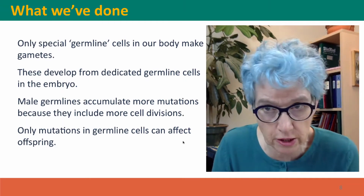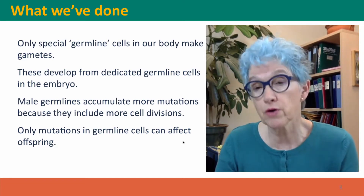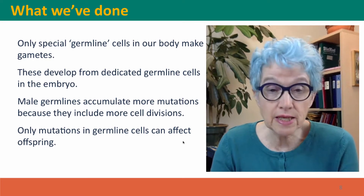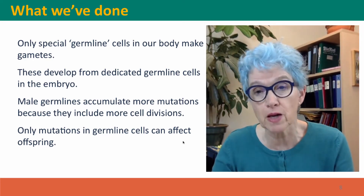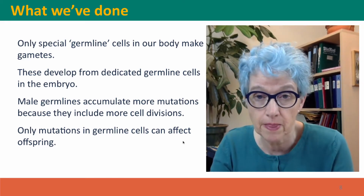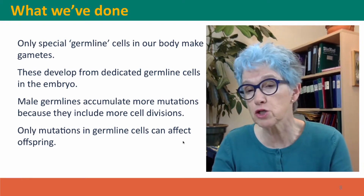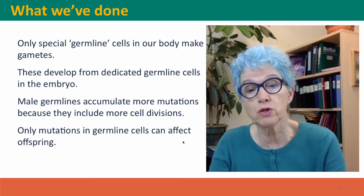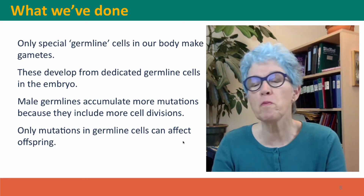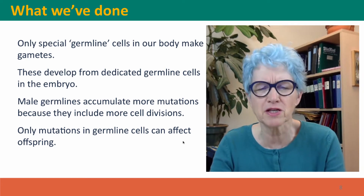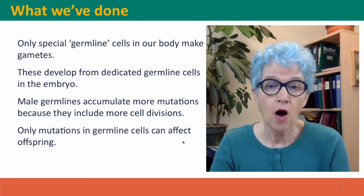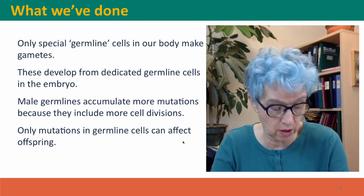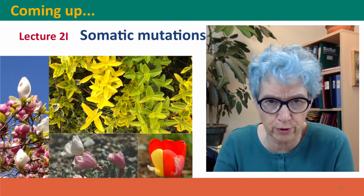That's all I'm going to say about mutations in the germline for now. Much of the rest of the course will involve thinking about the consequences for phenotype of differences in the germline. We've raised the issue of two categories of cells in our body — somatic cells and germline cells — and only germline cells make the gametes, developing from dedicated germline cells that specialize early in the embryo. Male germlines accumulate far more mutations than female germlines because they undergo many more cell divisions — something like 300 million sperm produced a day means a lot of opportunities for copying errors. Only mutations in germline cells can affect our offspring; somatic cells accumulate many mutations but they're not passed on. Coming up next, we'll talk more about somatic mutations.